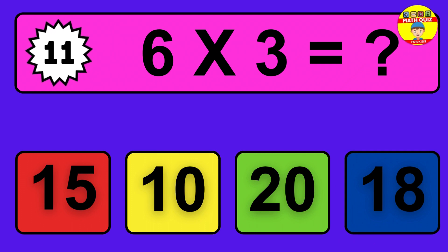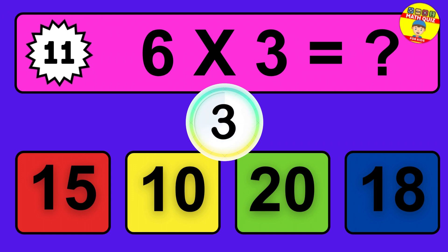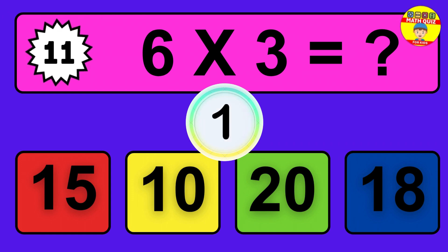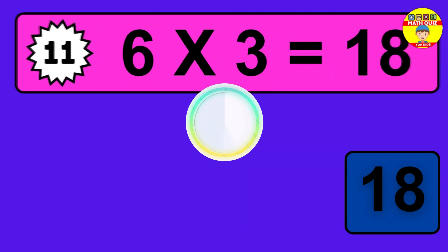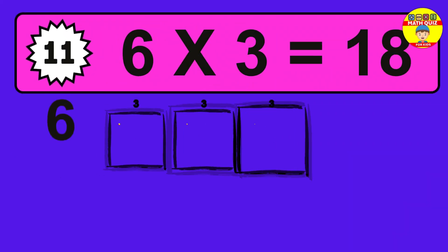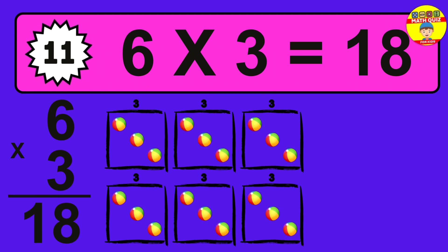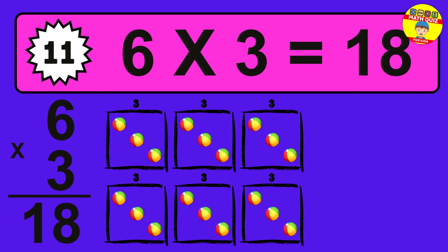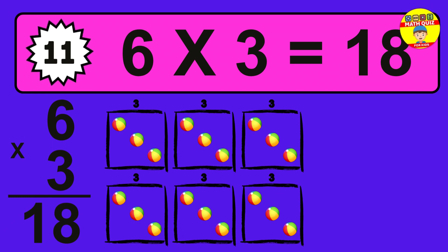Question 11. 6 times 3 equals what? The answer is 6 times 3 is 18. To calculate, we have 6 groups with 3 balls each one. So how many balls do we have? 18 balls.